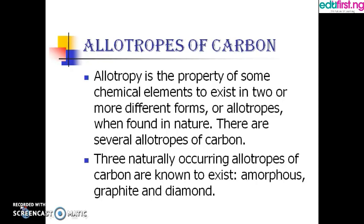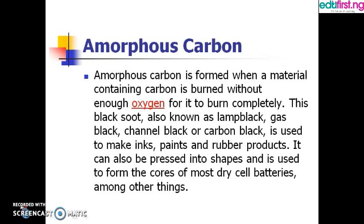Now let's talk about the allotropes — the forms in which we can get carbon. Allotropy is the property of some chemical elements to exist in two or more different forms. Carbon also exists in several forms, which includes amorphous carbon, graphite, and diamond.